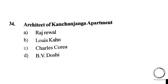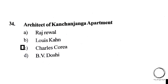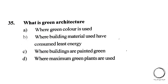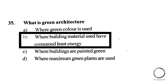Next question: The architect of Kanchanjunga Apartment is — A) Raj Rewal, B) Louis Kahn, C) Charles Correa, D) B.V. Doshi. The answer is C) Charles Correa. Next question: What is green architecture? A) Where green color is used, B) Where building materials used have consumed least energy, C) Where buildings are painted green, D) Where maximum green plants are used. The answer is B) Where building materials used have consumed least energy.